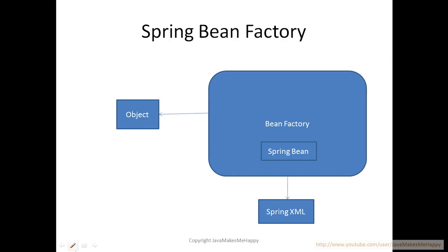We will also code this whole concept in our projects. The main method will be in the object, and the object which calls the Spring bean factory needs to provide the Spring XML file where we define the beans that need to be created. After that, the bean factory will read from the Spring XML and create the Spring bean and hand it over to the object. Now this is not really dependency injection yet, but this is the first step towards Spring framework coding. You need to understand the basics of Spring bean factory, and we will implement dependency injection in our next tutorial.